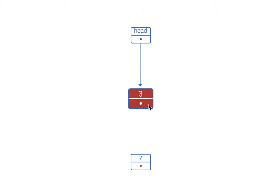How can we reach the node with value 3? We don't have direct access to it — we only have access to the head variable. So first we go to the head variable, read the memory address in its pointer part, and follow it to reach the node. There we see the data part is 3 and the pointer is null, meaning this is the last node. We then store the memory address of the new node into the pointer part of this last node.